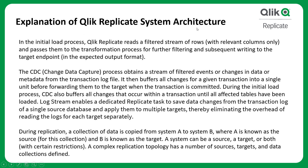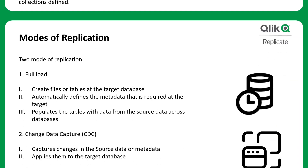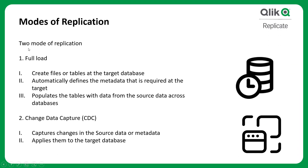In the initial load process, Qlik Replicate reads and filters a stream of rows and passes them to the transformation process for further filtering and subsequent writing to the target endpoint. During replication, data is copied from System A (source) to System B (target). A system can be a source, target, or both, with certain restrictions. A complex replication topology can have a number of sources, targets, and data collections defined.